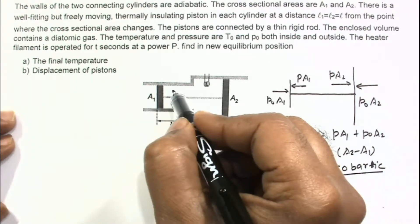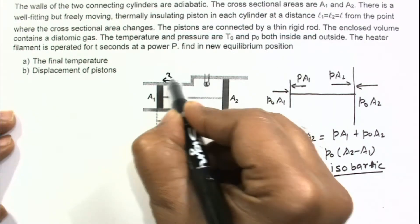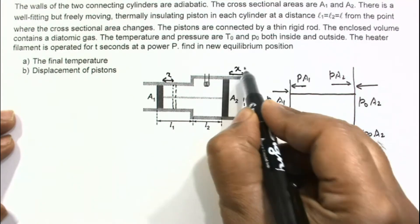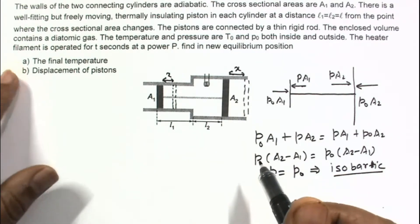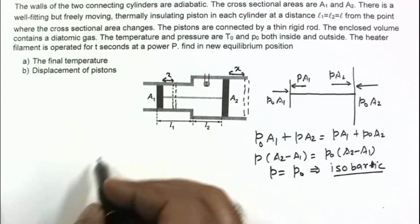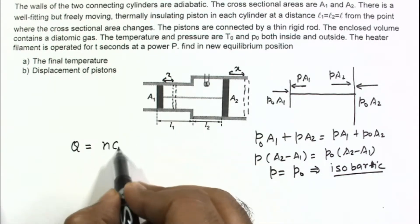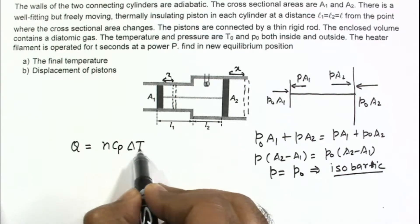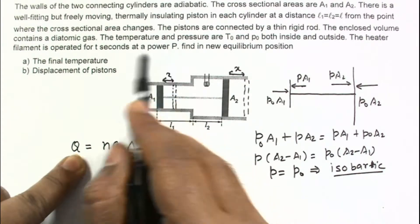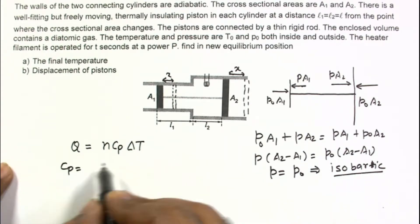In the final equilibrium situation, suppose each piston has moved by a distance x. We have to calculate the final temperature and displacement of the pistons, and the process is isobaric. For an isobaric process, the heat exchanged Q can be written as N·Cp·ΔT, and Q can be calculated from the given information as power multiplied by time, so Q equals P·t. Cp for a diatomic gas is 7R/2.